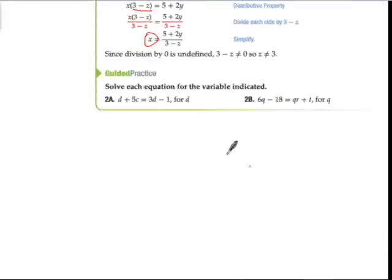Let's take a look at these two. I'm going to help you with the first one, and then you'll do the second one on your own. So 2A. So we're trying to get D by itself. So first let's get the 5C to the other side. So now we have D equals 3D minus 1 minus 5C. Then I'm going to subtract 3D from both sides.